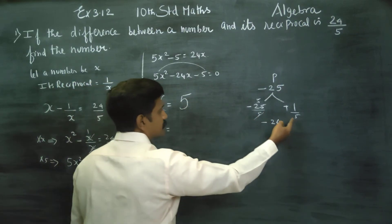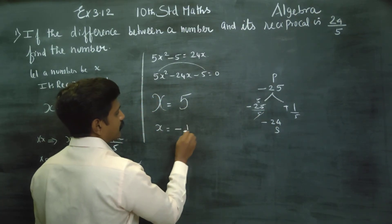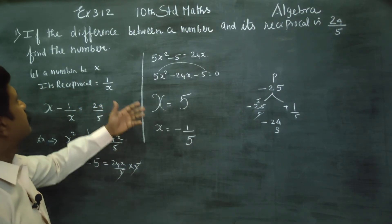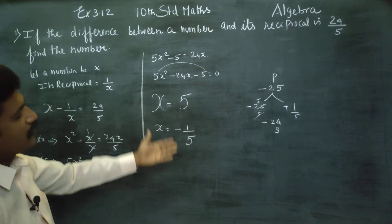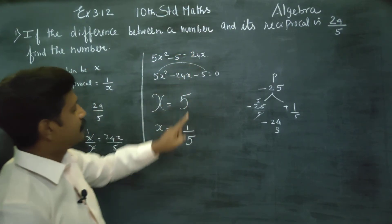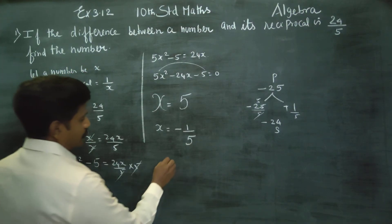x is equal to 5 or minus 1 by 5. Therefore, the number is 5 or minus 1/5.